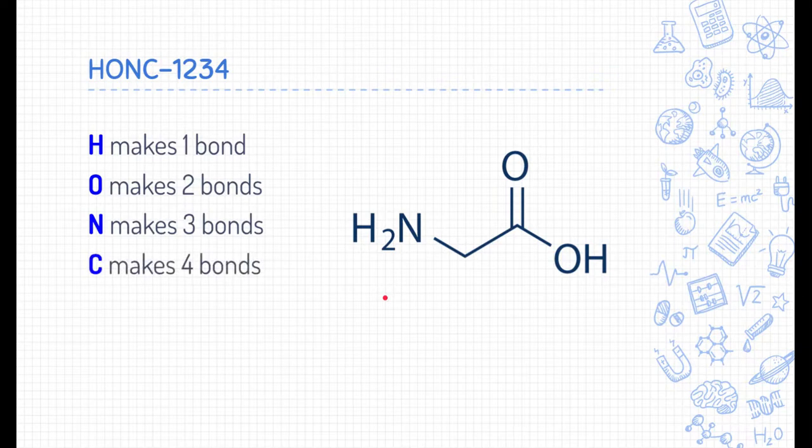Finally, carbon, as we stated before, often makes four bonds. This carbon right here is making two obvious bonds, one with this nitrogen and another with this carbon. But there's also two implied hydrogens here that are not written. This carbon is making four bonds as well. Two with the oxygens above it. One with the carbon to the left and one with the oxygen to the right.